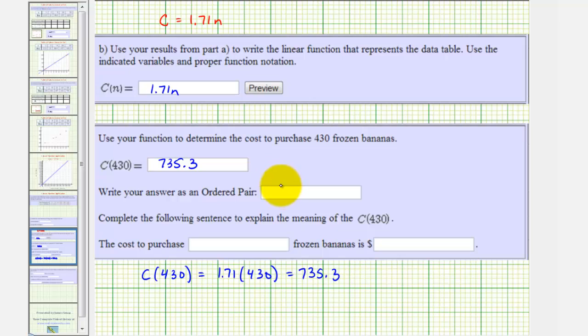As an ordered pair, this would be 430, comma, 735.3. The meaning of this is the cost to purchase 430 bananas is 735 dollars and 30 cents. Notice how we already have the dollar sign here in the question.